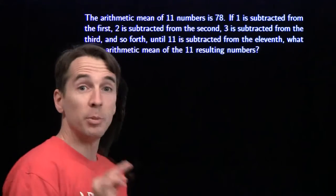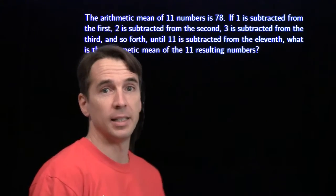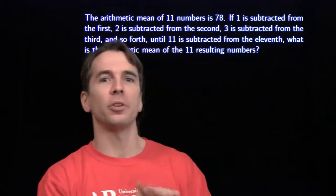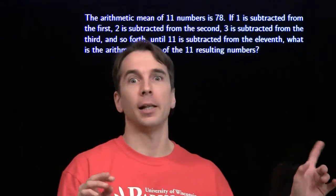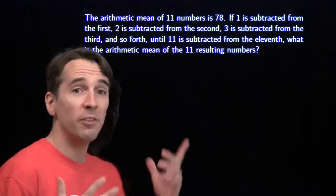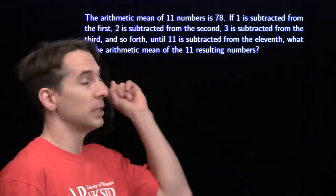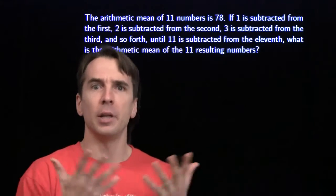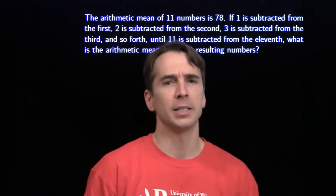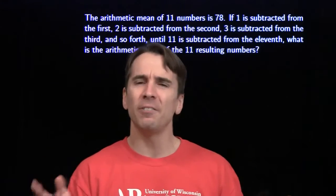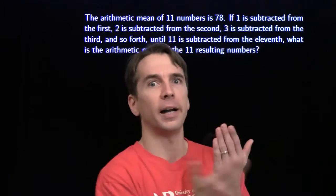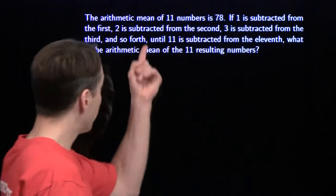The arithmetic mean of 11 numbers is 78. We're going to subtract 1 from the first number, 2 from the second, 3 from the third, and so on down the line until we subtract 11 from the last number. We want to find the arithmetic mean of the 11 numbers at the end. Arithmetic mean is just a fancy way to say average — you find the average by adding the numbers up and dividing by how many numbers you've got.